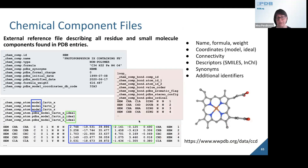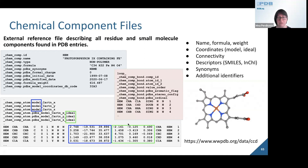The next type of files are chemical component files. The chemical component dictionary is an external reference file describing all residue and small molecule components in the PDB. These files contain information about the ID, name, formula, and molecular weight of the component. They contain a coordinate section with two sets of coordinates: model coordinates based on which the component was first created, and software-generated ideal coordinates for the molecule. The files also contain an atom connectivity section, as well as additional descriptors such as SMILES and InChI, synonyms if any, and additional identifiers.